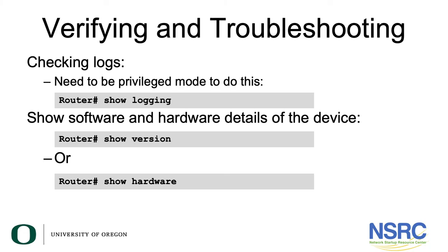An essential tool when troubleshooting on a router is the ability to check the logs. You can check the logs by simply typing 'show log' in privileged mode. Remember that events occurring on the router are saved in the logs.